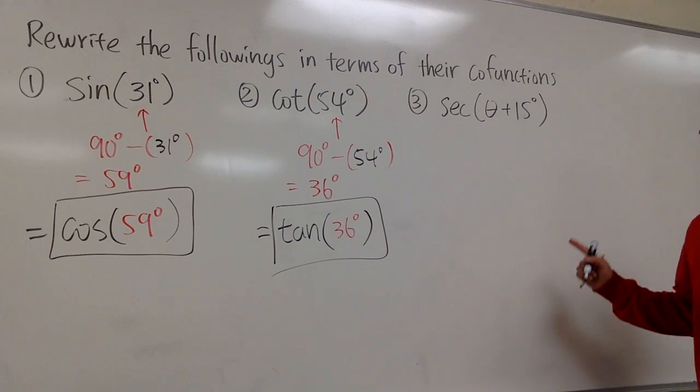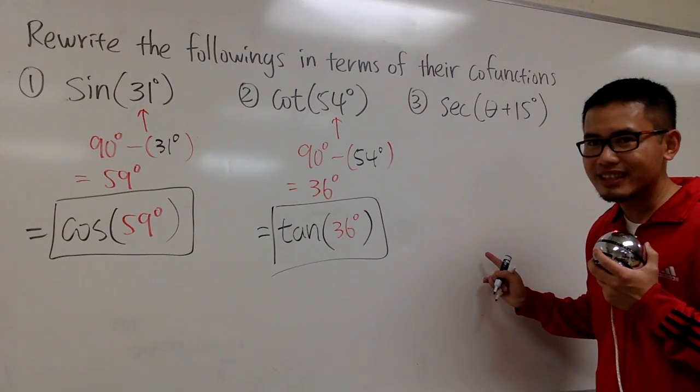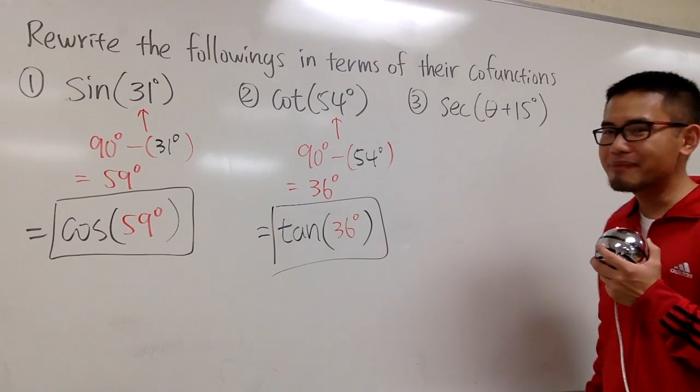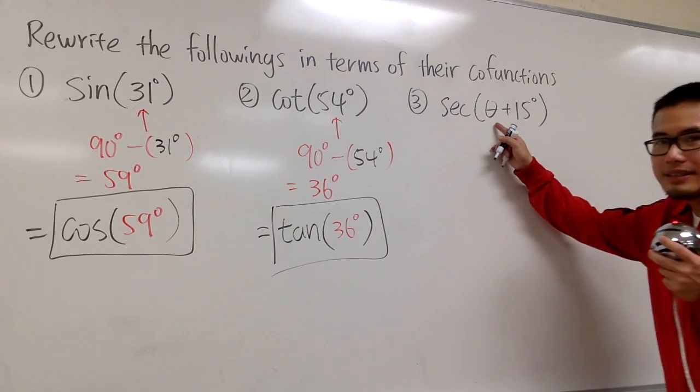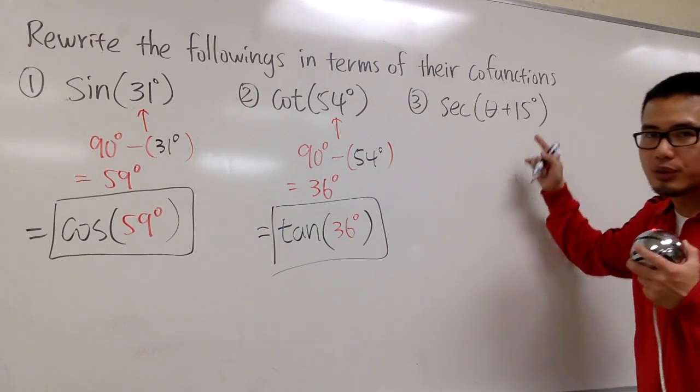And lastly, we have secant. Its co-function will be cosecant. And for cosecant, it spells as CSC. And right here, this angle altogether is just theta plus 15 degrees.